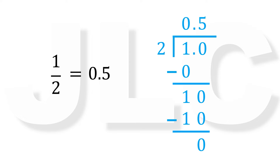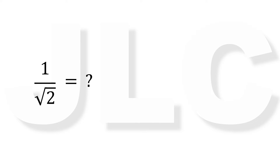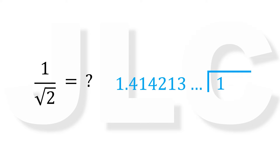Now this is quite easy. But let's say we have 1 over square root of 2 and we want to write it into decimal notation. We do this by dividing 1 by 1.414213, which is a non-terminating decimal, using long division. Now obviously, although it is doable, it is cumbersome to carry out. So instead of this, let's see what we can do to make it easier.